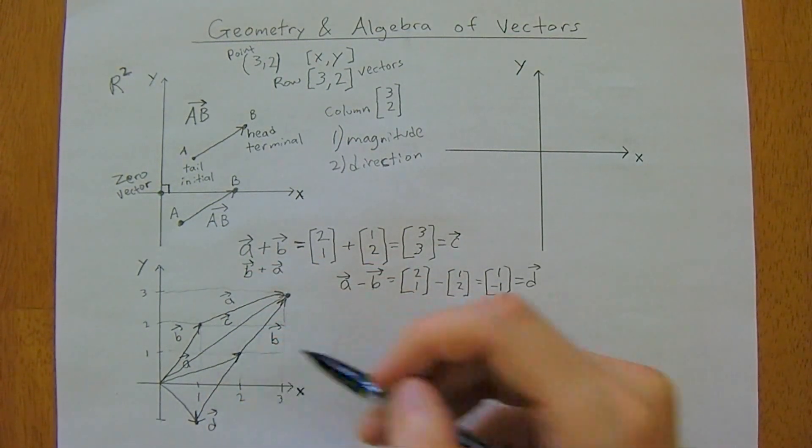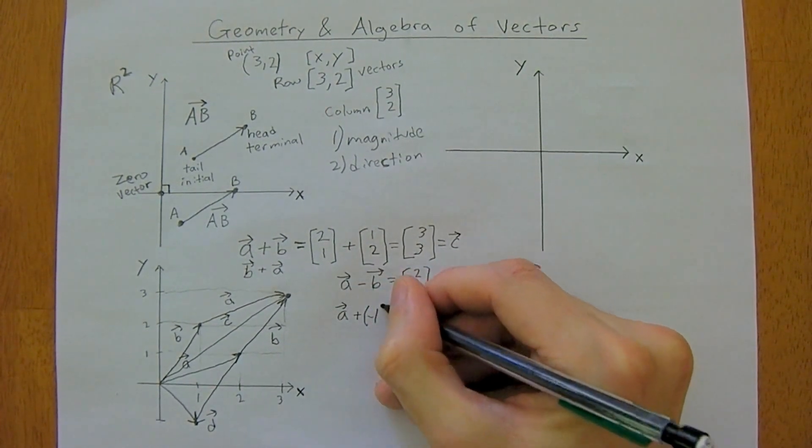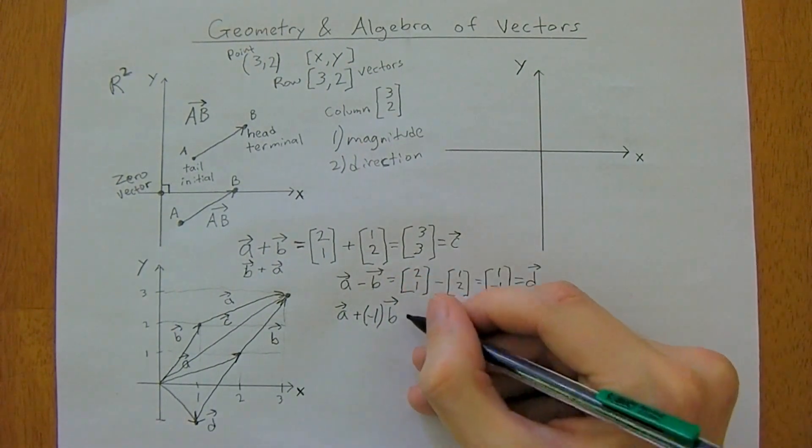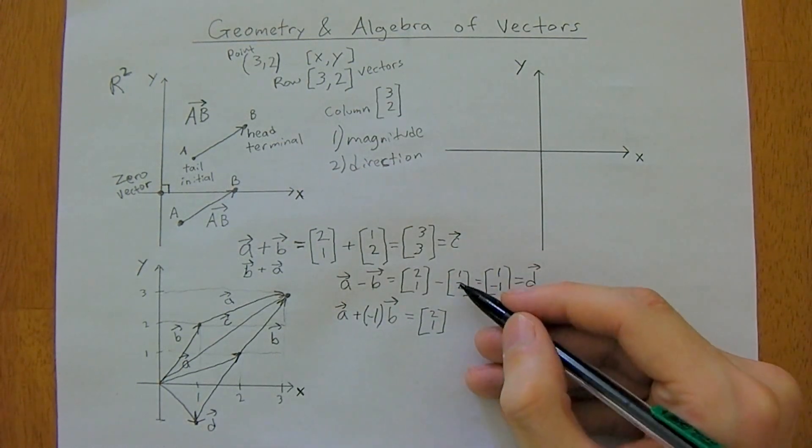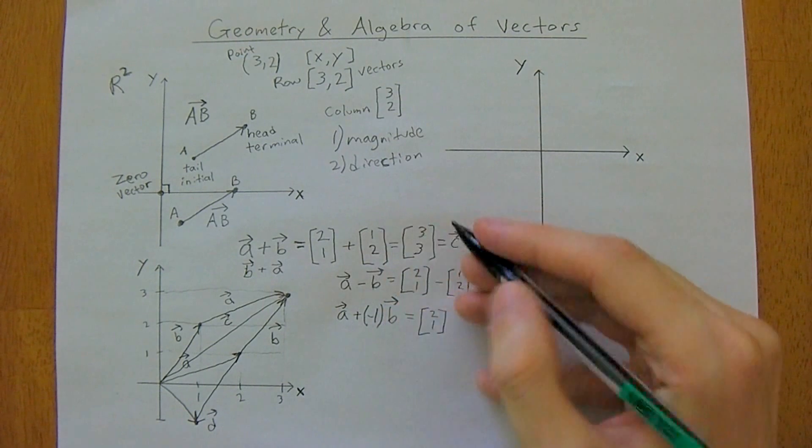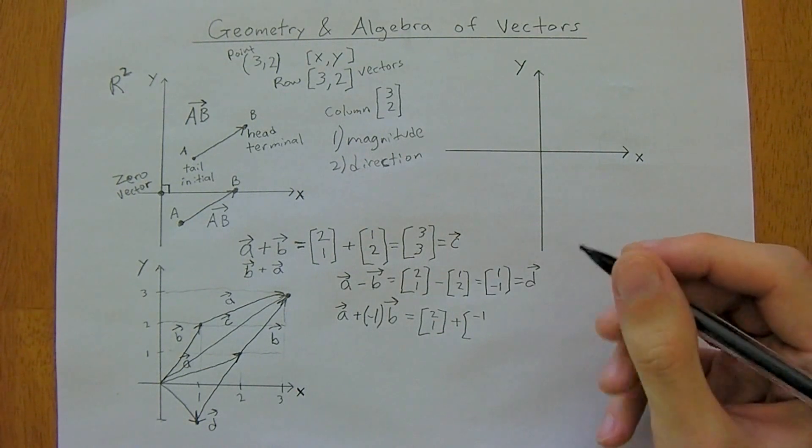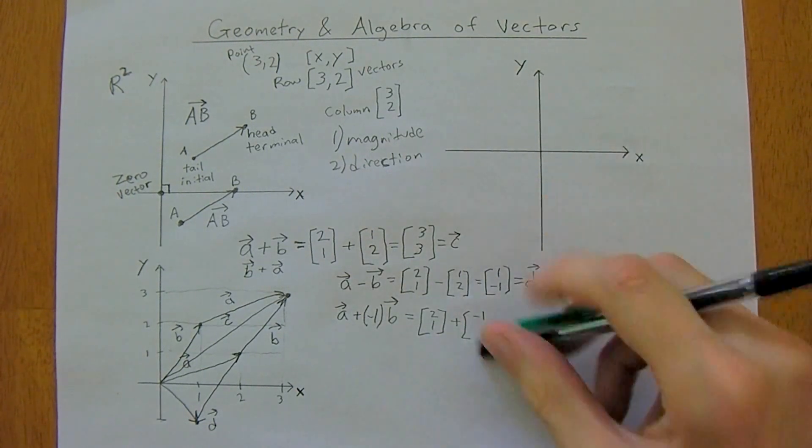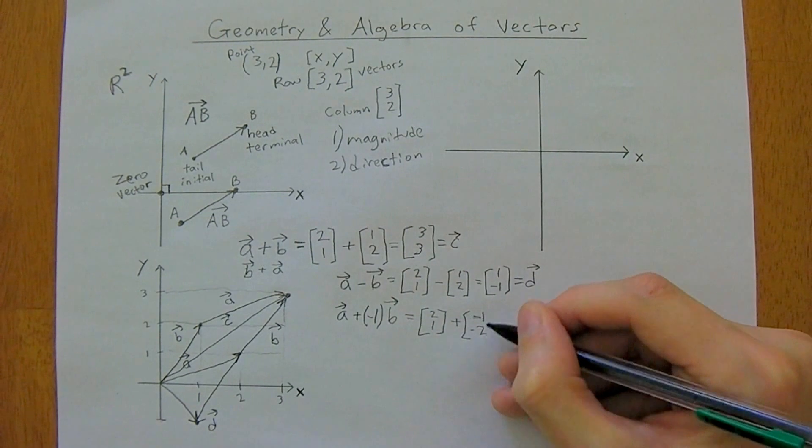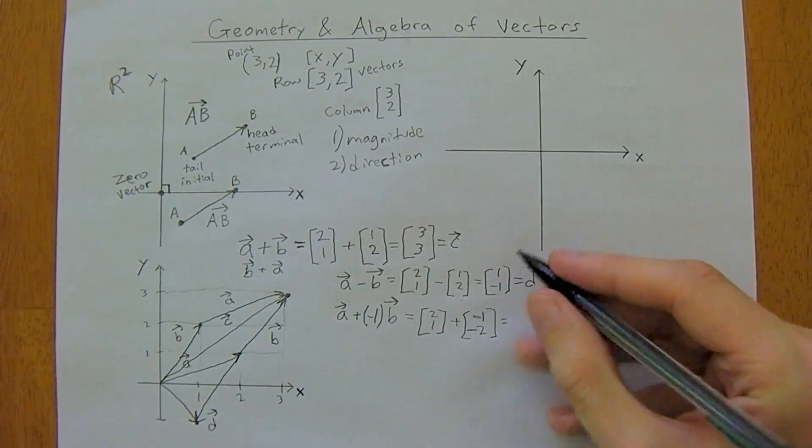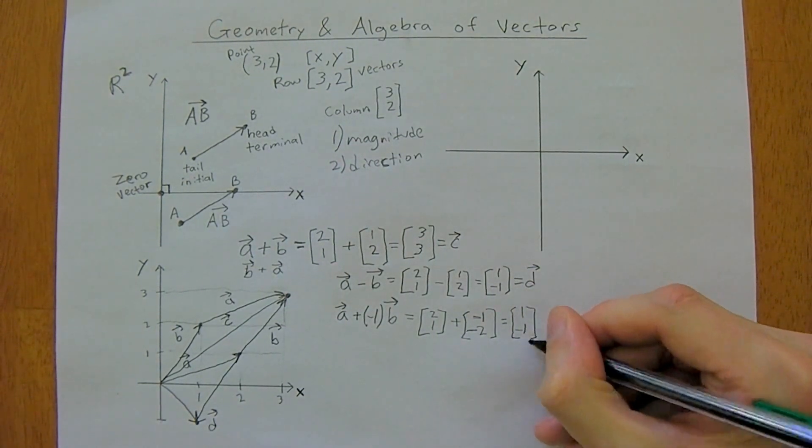You just multiply the vector by negative 1, so it's the same as if you had a plus negative 1 times b, which would be [2, 1]. Then you'd flip, so negative 1 times 1 is negative 1, and negative 1 times 2 is negative 2. So this would equal [1, -1], and it does, so it works.